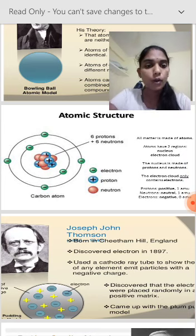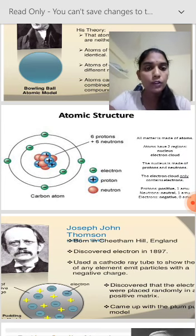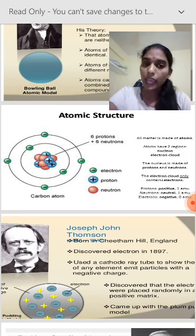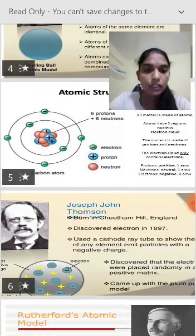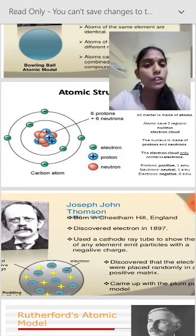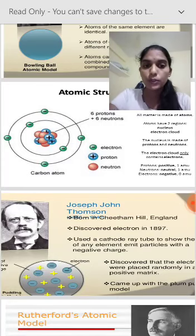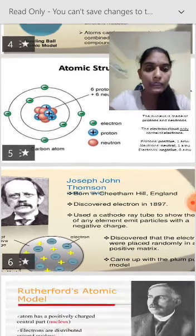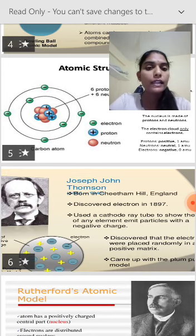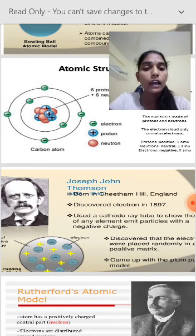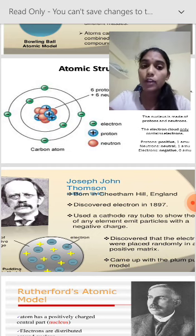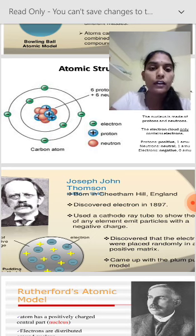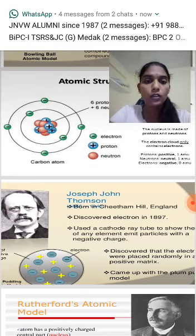All matter is made up of atoms. Atoms have two regions: the nucleus and the electron cloud. The nucleus is composed of protons and neutrons. The electron cloud only contains electrons — in that empty hollow space only electrons are present, not neutrons and protons.